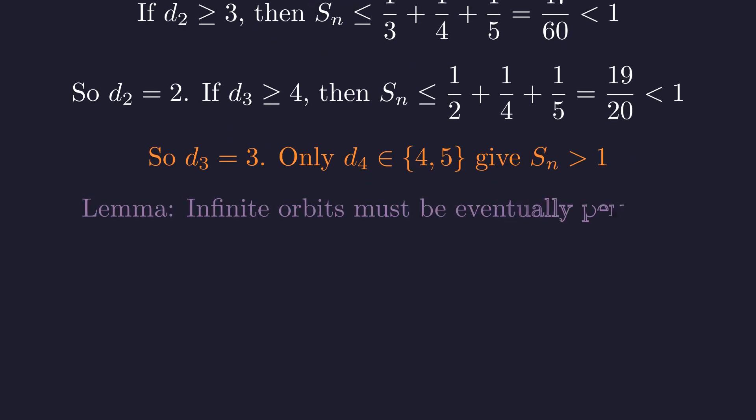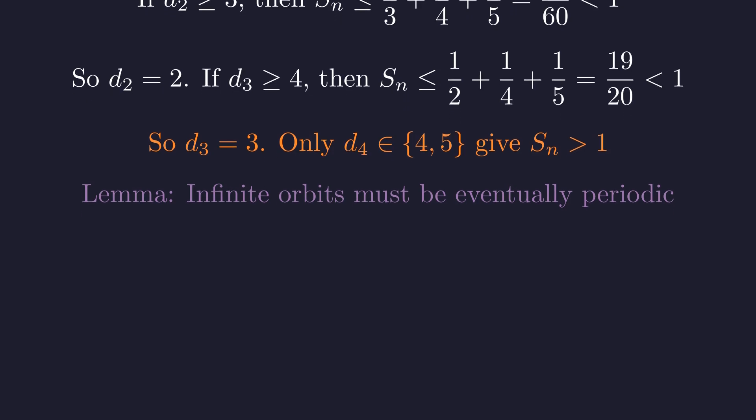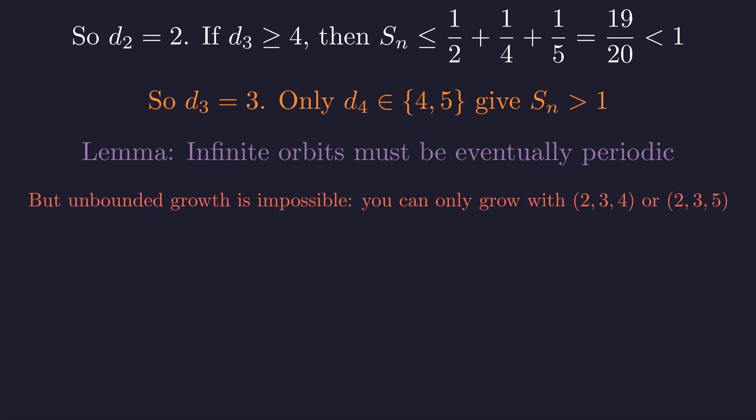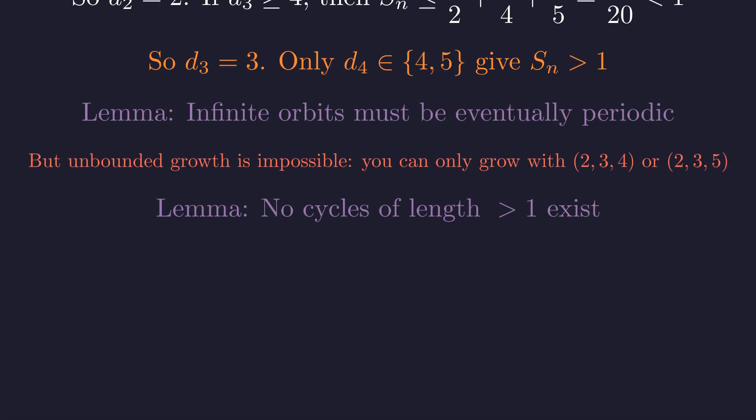A sequence of positive integers cannot decrease forever. It also cannot cycle with a period greater than 1, which can be shown with a prime factorization argument. And while the sequence can grow, this growth is not sustainable. The divisor patterns required for growth, which correspond to divisors (2,3,4) or (2,3,5), are very specific and cannot persist indefinitely. Therefore, since the sequence cannot decrease forever, grow forever, or cycle, it must eventually become constant.